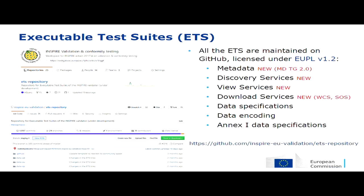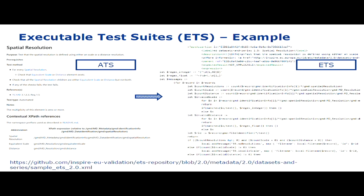The next step is the ETS. ETS are also available on GitHub under the European Union Public License, all within a single repository with one folder for each type of resource. Most of the work was done recently — ETS were added for metadata TG 2.0, Discovery Services (CSW), View Services (WMS, WMTS), and within Download Services, WCS and SOS are the new ones. The example shows the ATS on the left and on the right the corresponding XQuery code — the translation of the ATS into something executable.